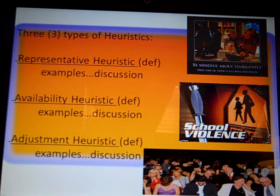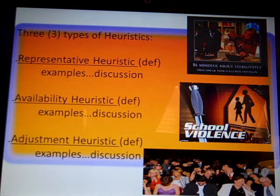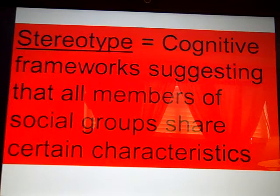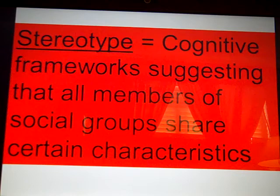That's the representative heuristic. There's an image here with an African American — it might even be Snoop Dogg — and Martha Stewart. Ask which one of these people has a felony, and most people say it's the Black guy, because we stereotype. Actually, it's Martha Stewart who has been convicted of a felony. The representative heuristic is the same thing as a stereotype — a cognitive framework suggesting that all members of social groups share certain characteristics. We assume things about Black people, about white people from rural areas like Lincoln County: that they're rednecks, uneducated, that they hunt and fish.